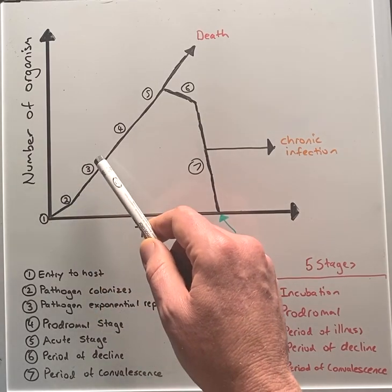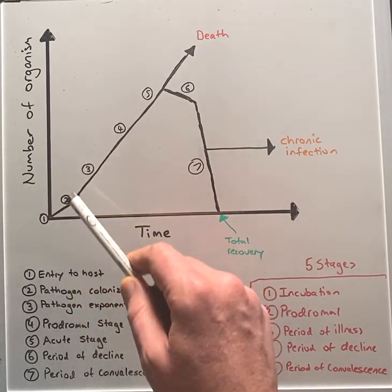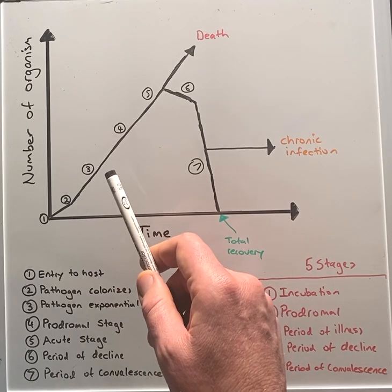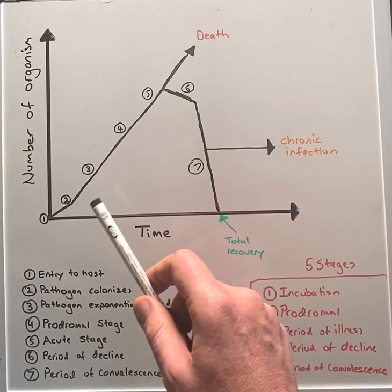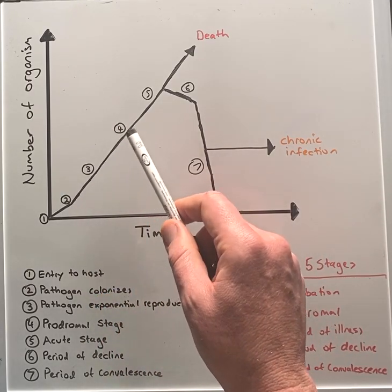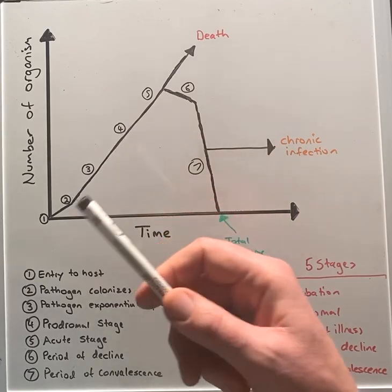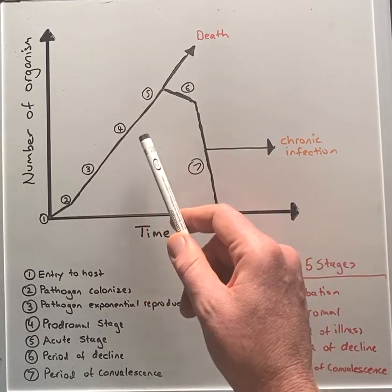So the number of organisms will increase. The incubation period can last between five to six days, but all the way out to 14 days. Step four, the prodromal period manifests with fever, malaise, and dry cough.